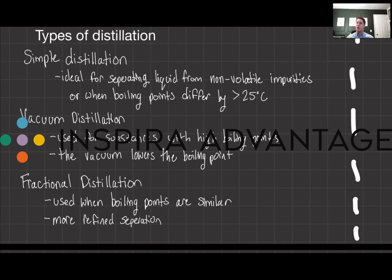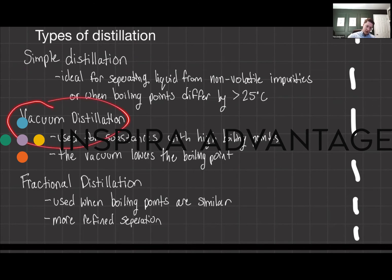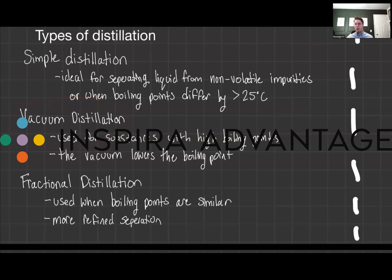The third method you need to know for the MCAT is called fractional distillation. This is used when the boiling points of components are closer together and requires a fractionating column, which allows for multiple cycles of condensation and vaporization, leading to a more refined separation. Most commonly though, vacuum distillation is going to be your go-to.